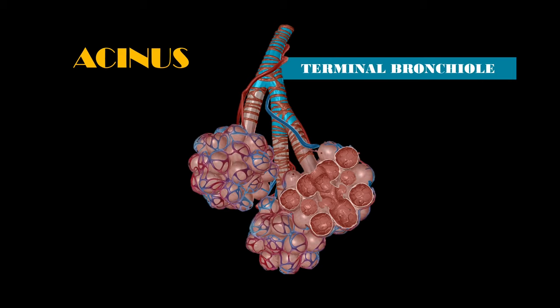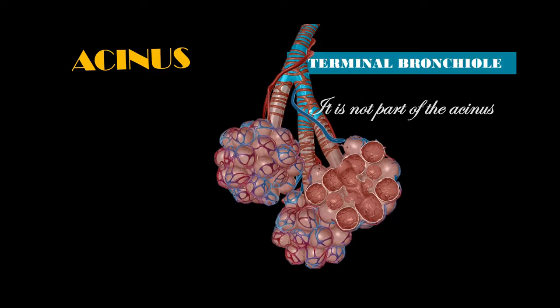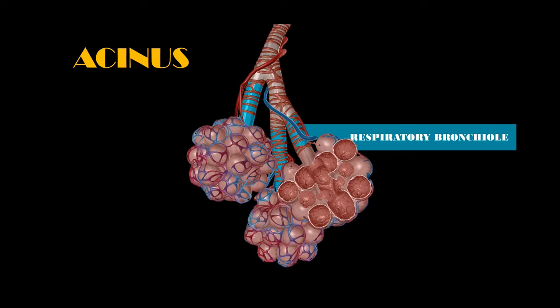This is the terminal bronchiole. The terminal bronchiole is not part of the acinus, but it serves as a landmark for its definition. An acinus is anatomically defined as the lung portion distal to a terminal bronchiole and it is the largest parenchymal structure in which all airway units participate in the gas exchange. Let's move to the next page to meet the real acinar structures.